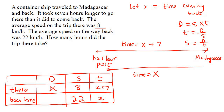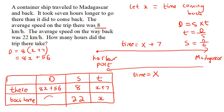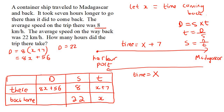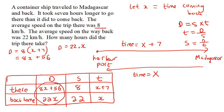Now we can use our distance equals speed multiplied by time formula and work out the distance. The distance going there is eight multiplied by (x plus seven), so you put that in a bracket and multiply it in: that gives eight x plus 56. For the return trip, the distance is 22 multiplied by x, which is just 22x. We know that the distance going there and the distance coming back is exactly the same, so we can make these two expressions equal to each other: eight x plus 56 equals 22x.